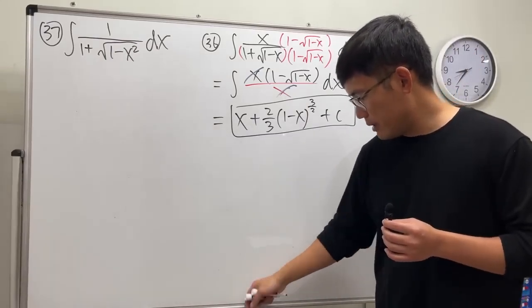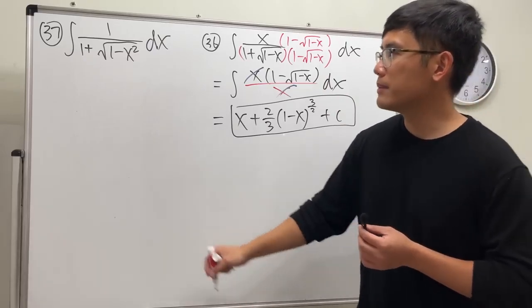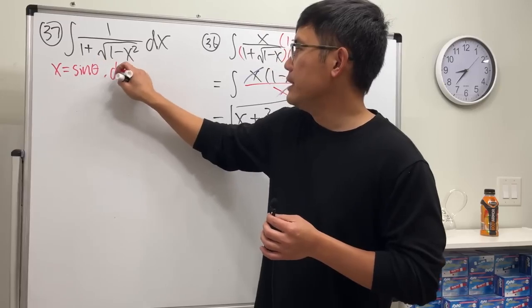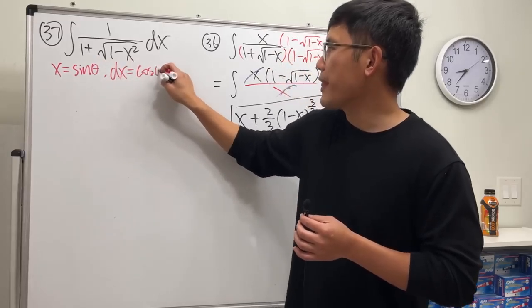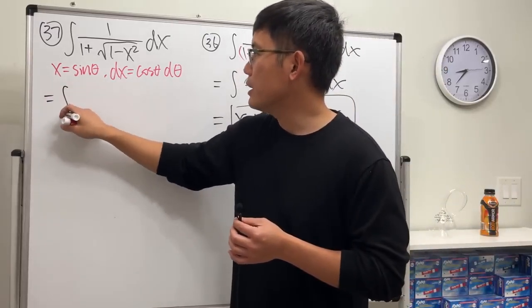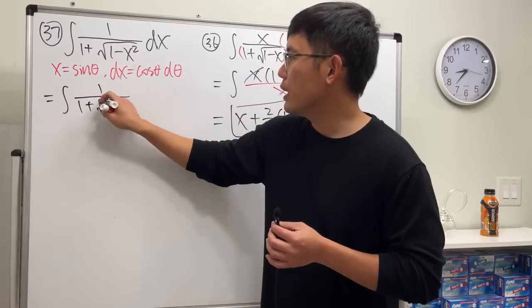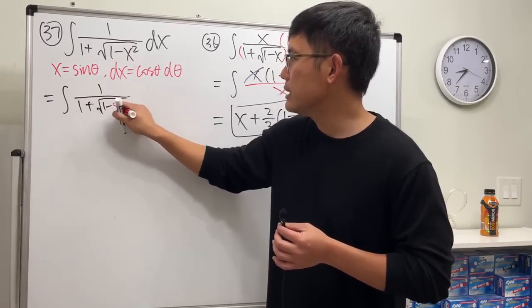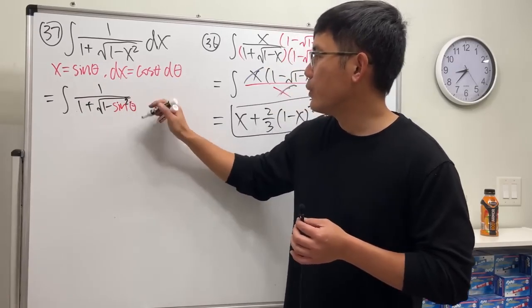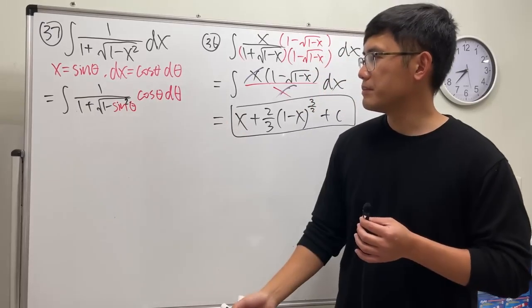I will recommend us to just take a trig substitution and see what happens. Take x to be sine theta, dx equals cosine theta d theta, and then we can see that this right here becomes the integral one over one plus square root of one minus sine square theta, and then we have cosine theta d theta.